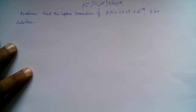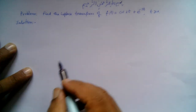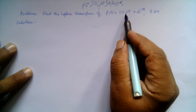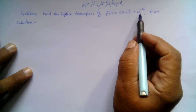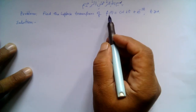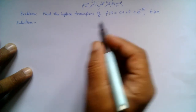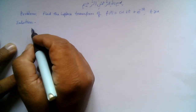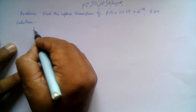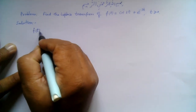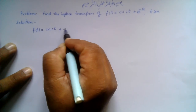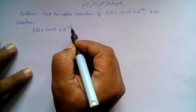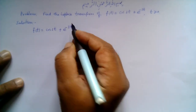Furthermore, if we know the Laplace transform of cos(2t) and e^(-3t), we can find the Laplace transform of f(t) using the linearity property. We are given that f(t) = cos(2t) + e^(-3t).